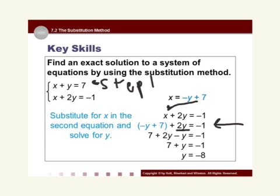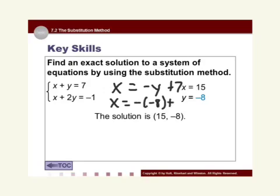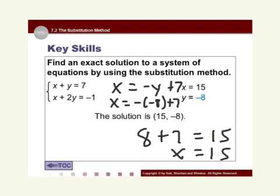Now that I know the value of one variable, I plug it back into the equation used in step one: x equals negative y plus 7. Since y equals negative 8, I substitute: x equals negative negative 8 plus 7. Negative negative 8 is positive 8, and 8 plus 7 equals 15, so x equals 15. I now have my ordered pair solution: (15, negative 8).